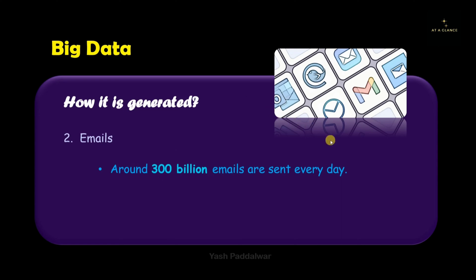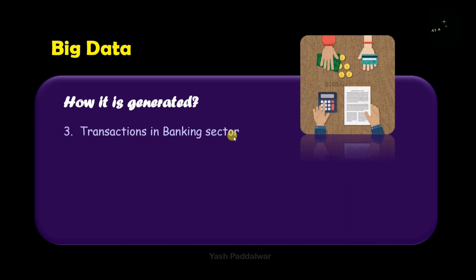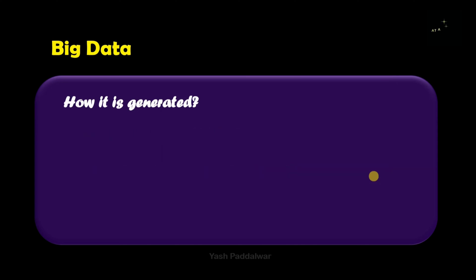Each email contains different attachments, which can be of different types — text, images, videos, audios — each with different file extensions. Next are the transactions done in the banking sector. Transactions are always confidential and very important; a single mistake in a transaction record can create a lot of chaos. More than 100,000 transactions are done per second, and in one day the total is enormous — each one has to be stored and managed efficiently.